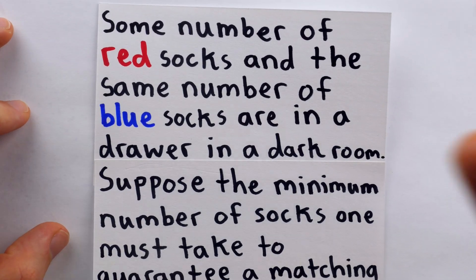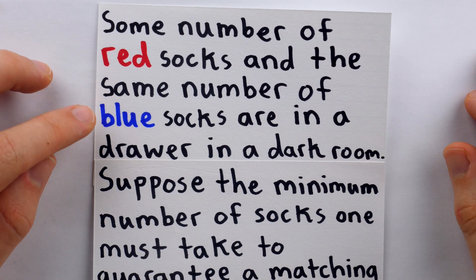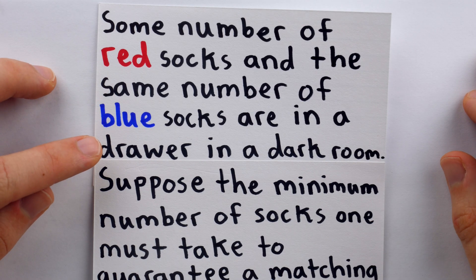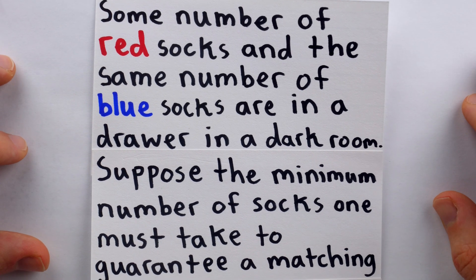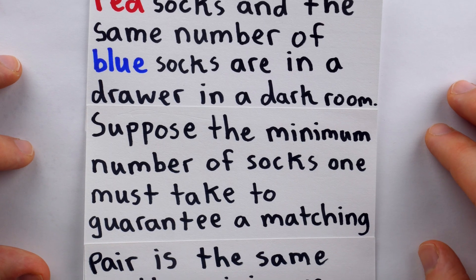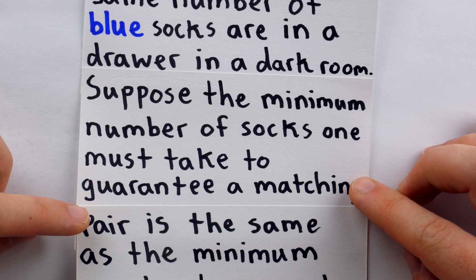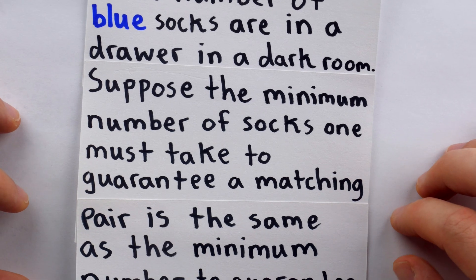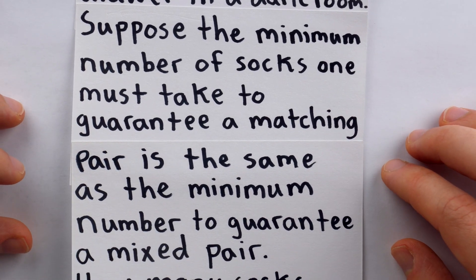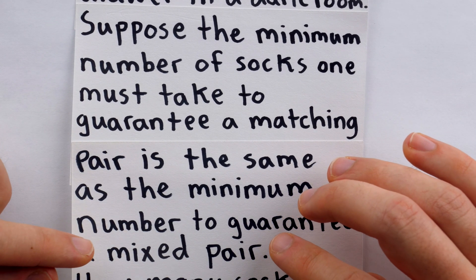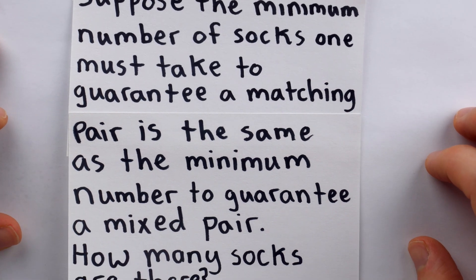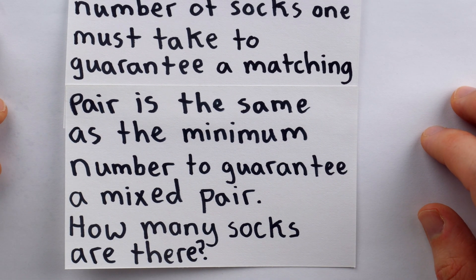Some number of red socks and the same number of blue socks are in a drawer in a dark room. Suppose that the minimum number of socks one must take to guarantee a matching pair, that is a pair of socks of the same color, is the same as the minimum number to guarantee a mixed pair, that is a pair of socks of two different colors. How many socks are there in total?